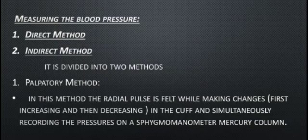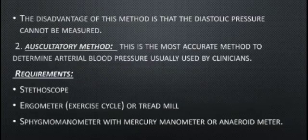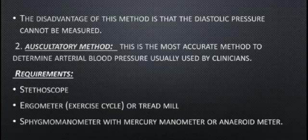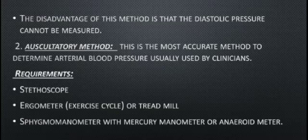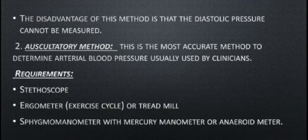The disadvantage of the palpatory method is that diastolic pressure cannot be measured. In this method, we apply the cuff, do not use a stethoscope, fill the cuff with air, then open the valve to allow air to decrease. When the mercury column falls to the level of systolic blood pressure, the pulse is felt again. This gives us the systolic blood pressure.